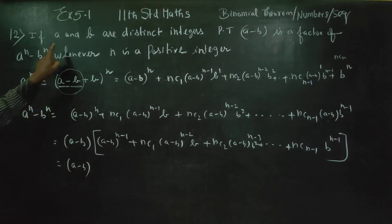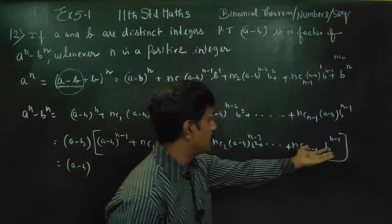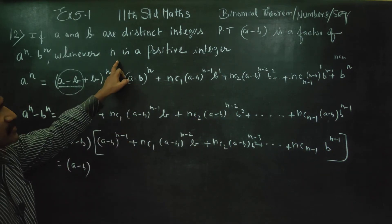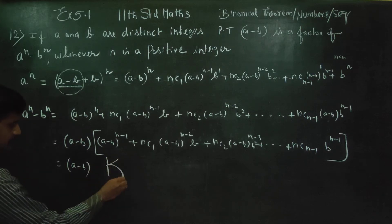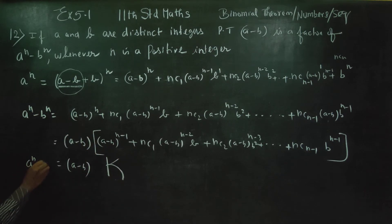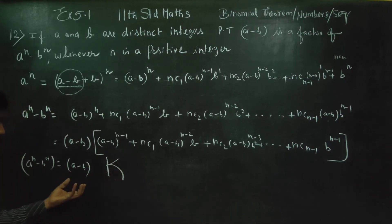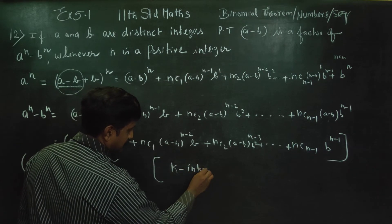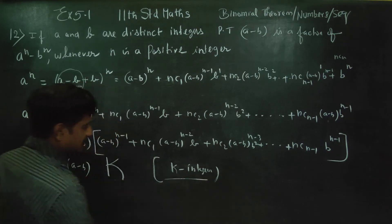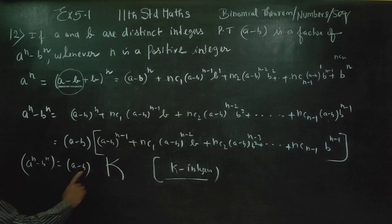A and B are two distinct integers. A and B are numbers. If you use any integer, all these numbers are two distinct integers, then it becomes some constant. A power N minus B power N is expressed as a multiple of A minus B. If it is expressed as a multiple of some number — A minus B into some integer — if it is expressed as a multiple of an integer, we know the arithmetic model. Multiple of a number is divisible by A minus B. This is divisible by A minus B.